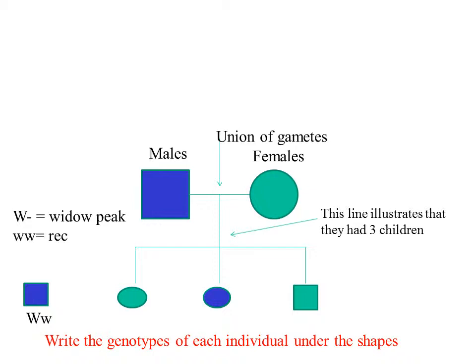If you have widow's peak, we're going to shade in your shape — either a square for you being a male or a circle for you being a female. The lines between the shapes indicate a union between gametes, meaning sex occurs and babies are formed. The babies are shown below the original parents. If a shape is shaded, the individual has the trait. Write the genotypes right under these shapes, taking into consideration that if you have the trait, you're shaded. If you're not ready to proceed, push pause.